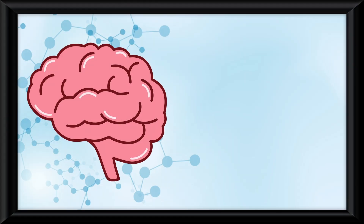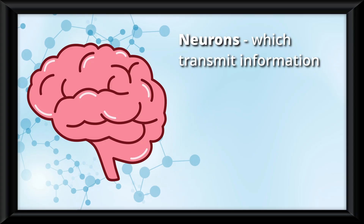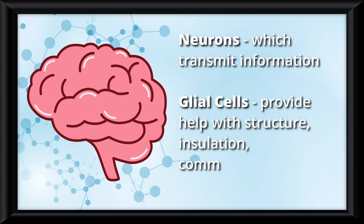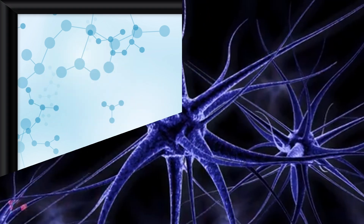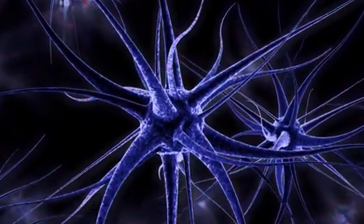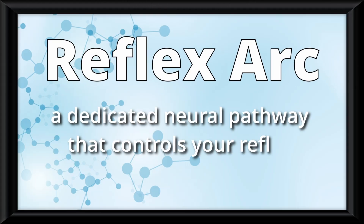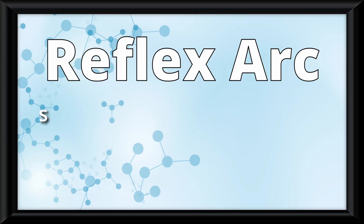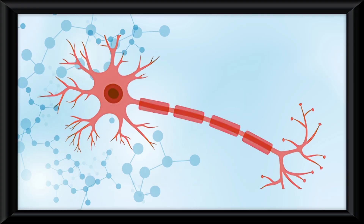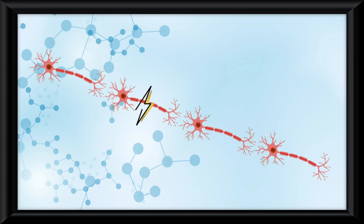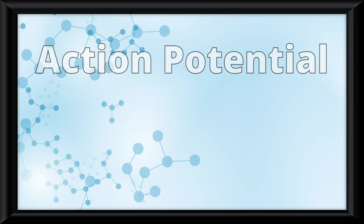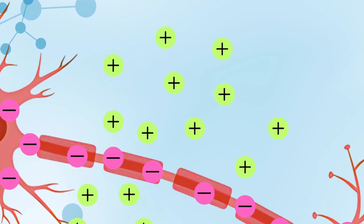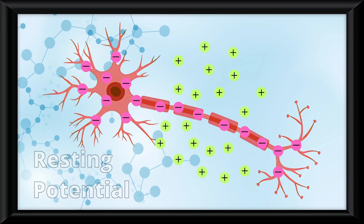Your brain has a lot of cells. The two most common are neurons, which transmit information, and glial cells, which provide help with structure, insulation, communication, and waste transport. The nervous system works through electrical and chemical pulses that transmit information and responses. One such example is the reflex arc, a dedicated neural pathway that controls reflex movements — such as when you immediately take your hand off a hot stove. The arc is made up of sensory, motor, and interneurons in the spinal cord. For a signal to be fired, an action potential must be reached. Essentially, there are a bunch of positive ions waiting to enter a polarized neuron — this is a neuron in resting potential.